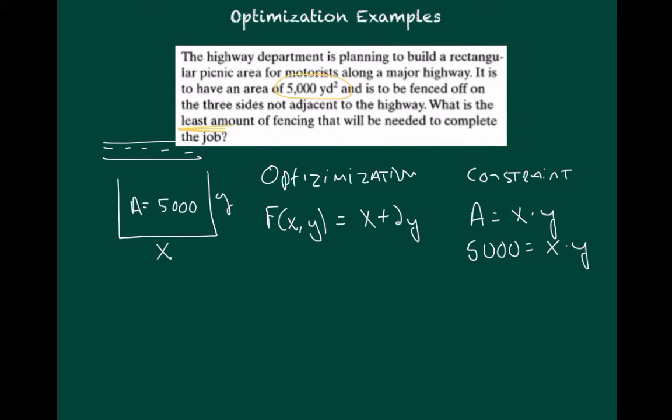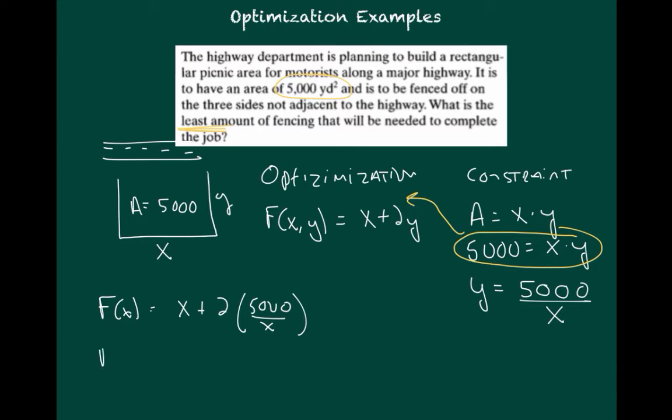Now we're going to use the constraint equation and we will substitute in to the optimization function. It really doesn't matter whether you solve for x or for y. I'm going to, just to keep things in terms of x, I'm going to solve for y. I do that by just dividing both sides by x and so now I see that y equals 5,000 over x. So my new optimization function is going to be just f(x) equals x plus 2 times what had been y, which is 5,000 over x. Now, I can simplify that a little more to get x plus 10,000 over x.